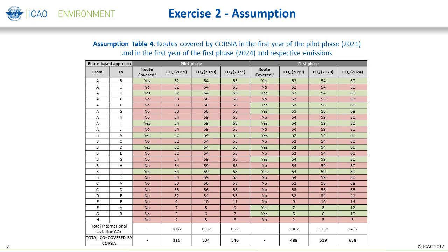Remember, a state's participation in the pilot phase and in the first phase of CORSIA is voluntary, and CORSIA applies to international routes between states both of which are participating in CORSIA, as per Assembly Resolution A-39-3, Paragraphs 9 and 10.